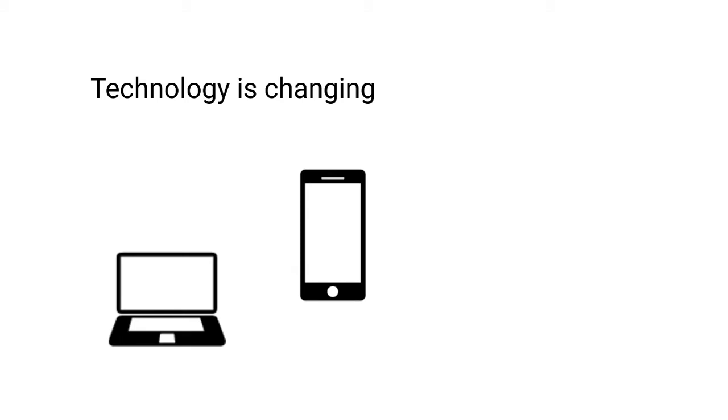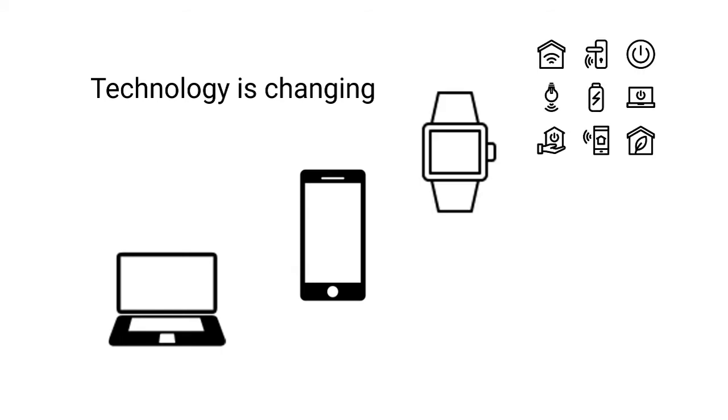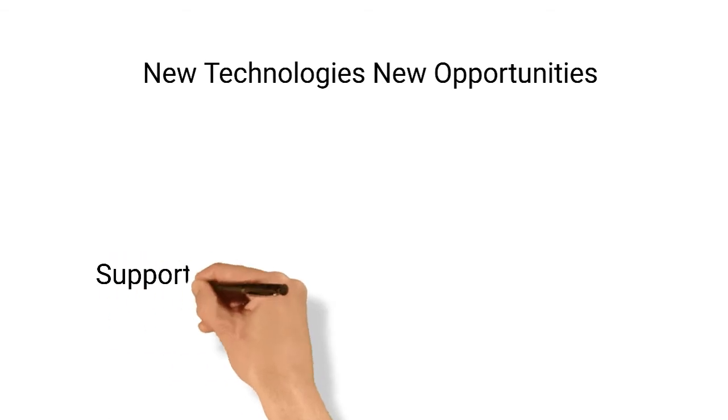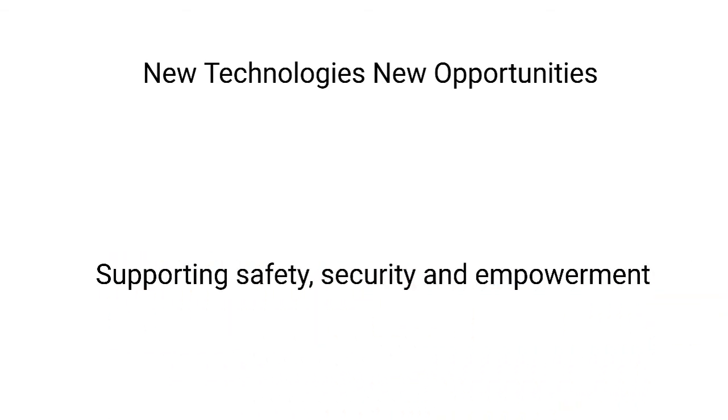Technology is changing from computers to phones and tablets to wearables and smart homes. Technology is everywhere. It's pervasive and new technologies offer new and exciting opportunities. So how can technology enable people with disabilities to live more independently?